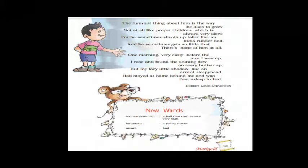Next stanza: 'For he sometimes shoots up taller like an Indian rubber ball, and he sometimes gets so little that there's none at all.' The poet compares the shadow with an Indian rubber ball because the rubber ball bounces up and down; similarly, the shadow also grows big and small. Sometimes it becomes very tiny and is not seen anywhere.